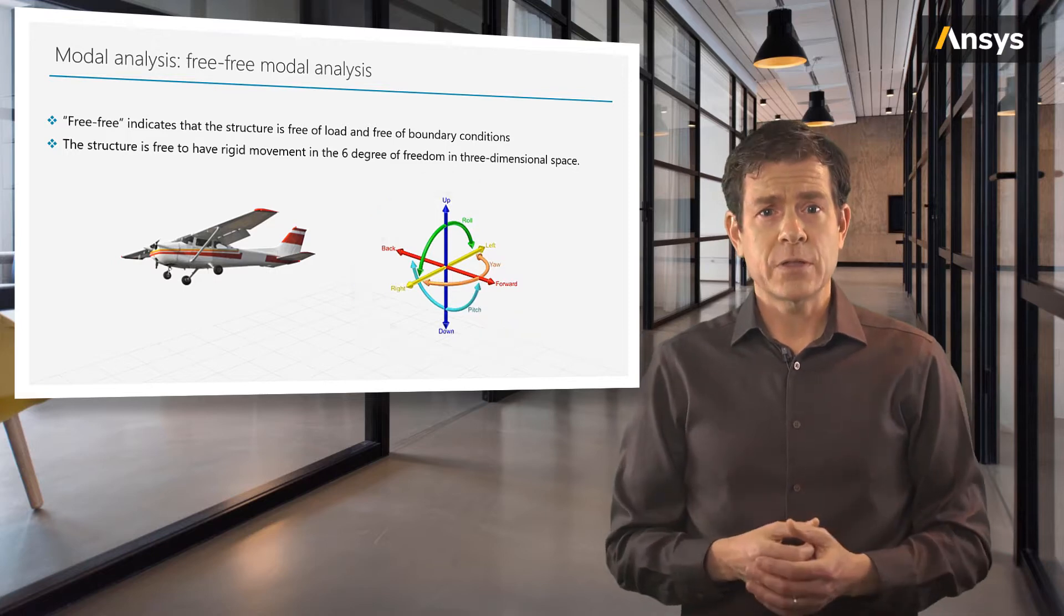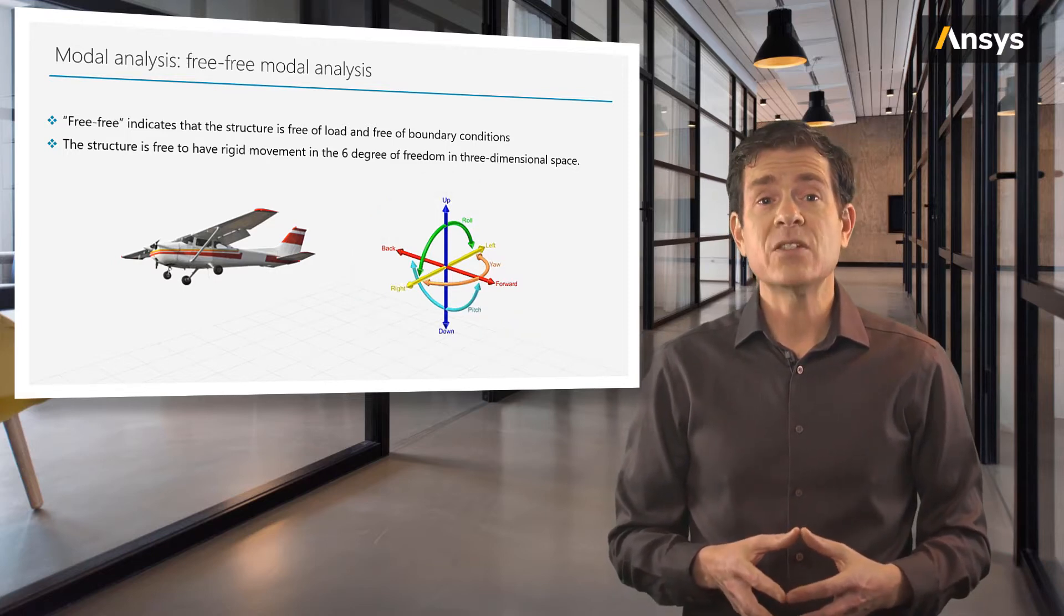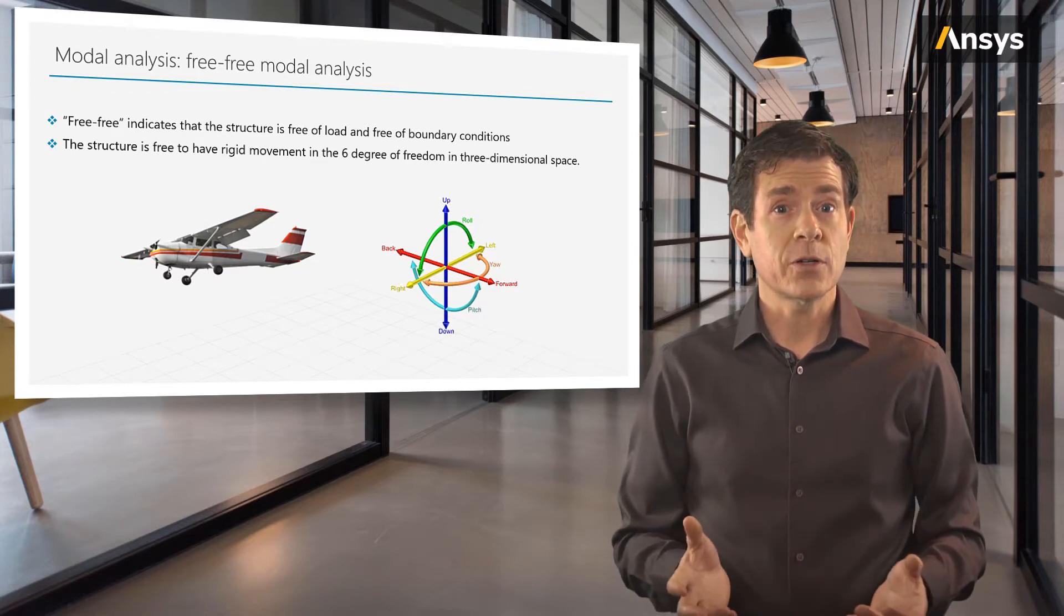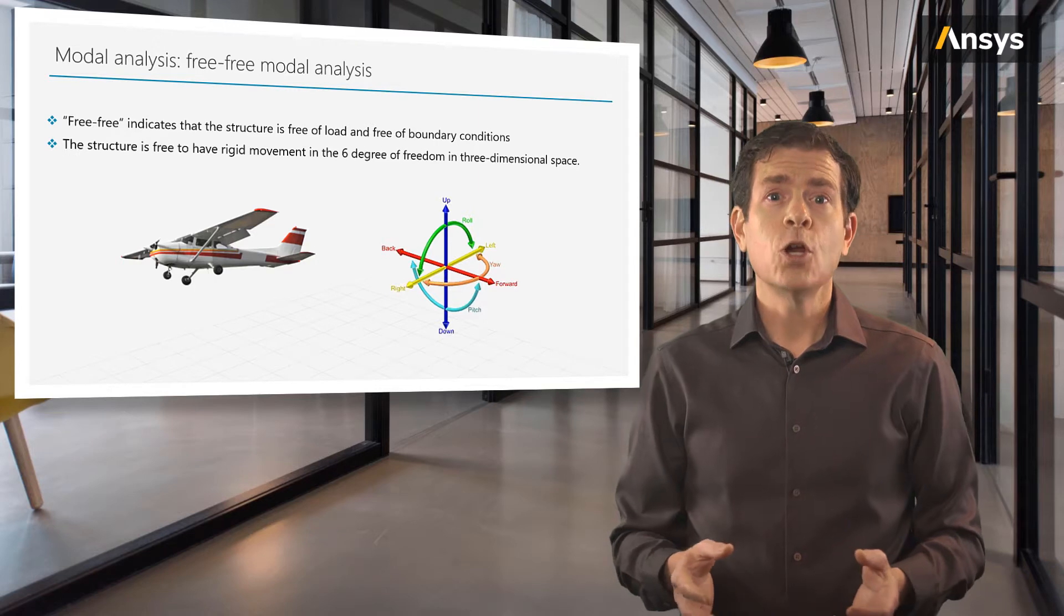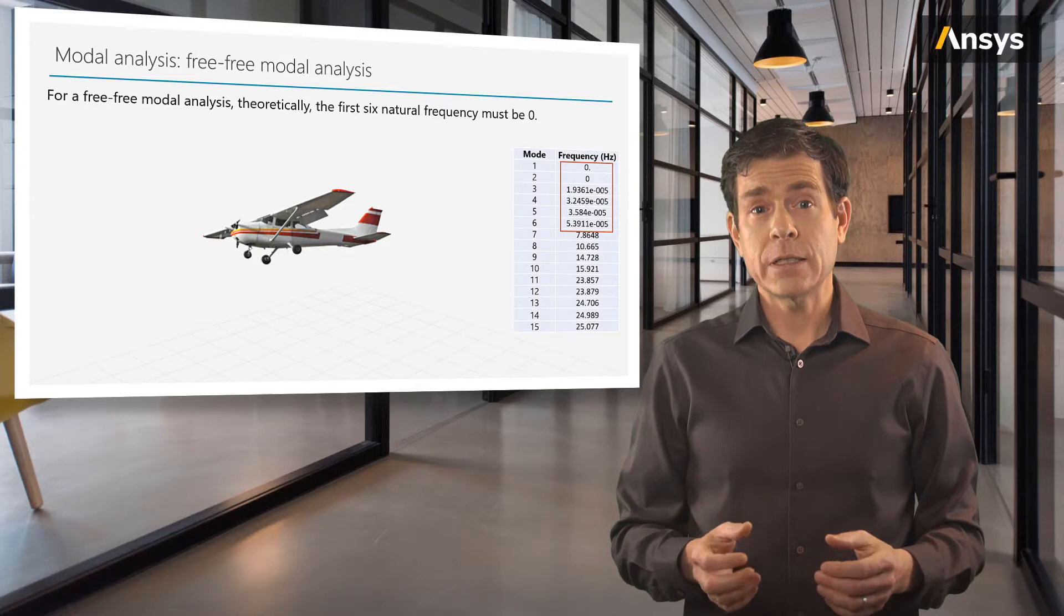For a free-free modal analysis, theoretically, the first six natural frequencies will be zero. Zero natural frequencies mean that the structure can have rigid body motion without any excitation. This is expected as there are no boundary conditions.